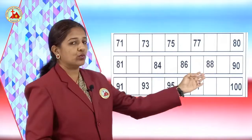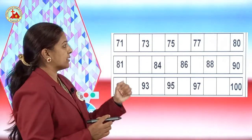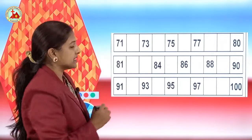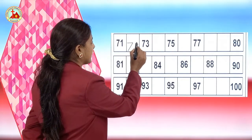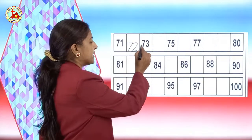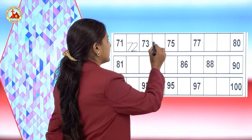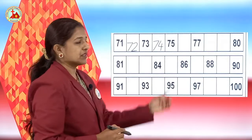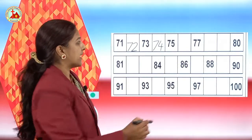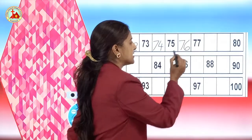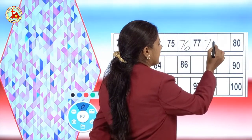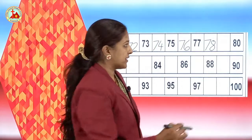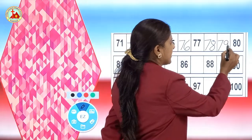Now, 71 to 100 missing numbers. Here you can see numbers are written and some are missing. The first number is 71. After 71, 72. Then 73. After 73, 74. After 74, 75. Then the next missing number is 76. Then 77 is written. After 77, 78. After 78, 79. And next is 80.